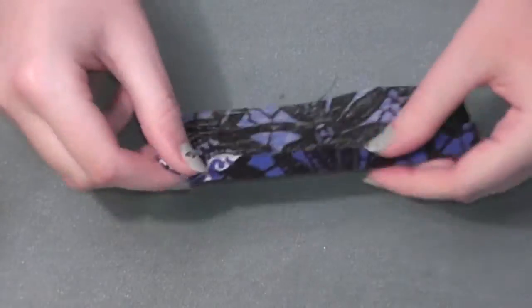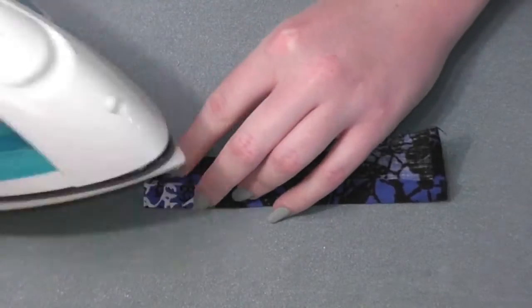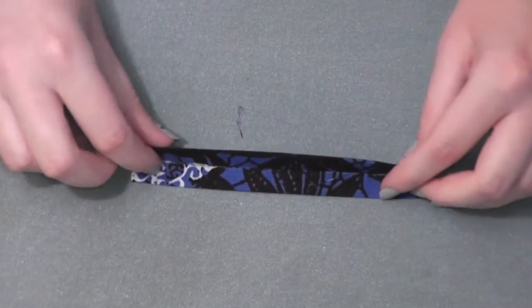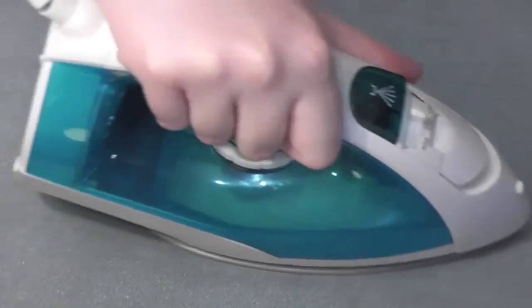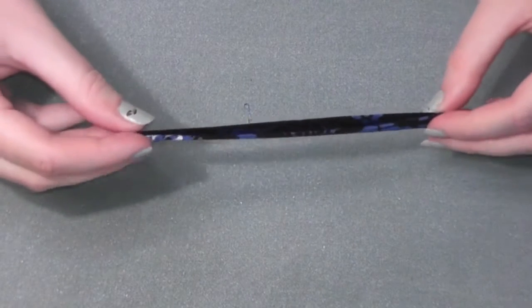Then just flip it over, fold the other raw edge into the center and iron that down. Fold the fabric in half so the two newly pressed edges meet. Iron one more time and you'll have a neat piece of fabric to decorate your bracelet.